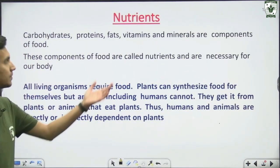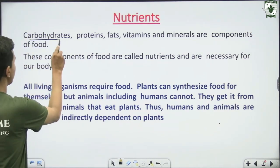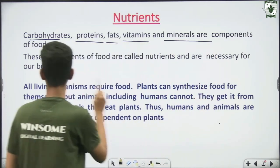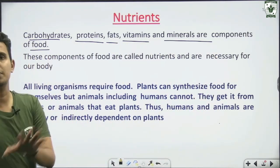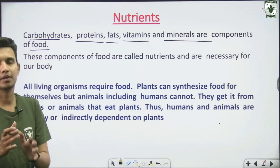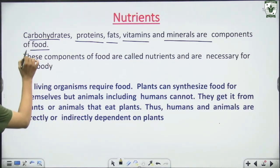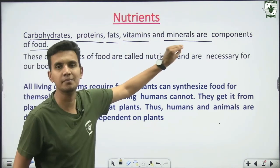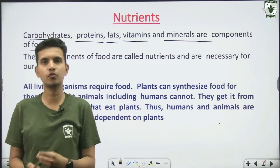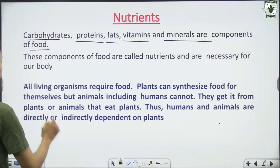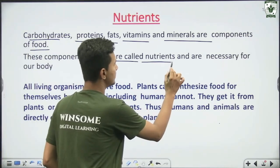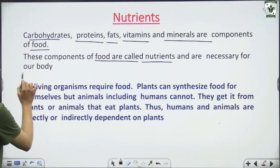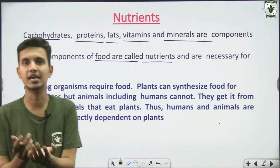Let's talk about nutrients. Carbohydrates, proteins, fats, vitamins, and minerals are the components of food. Carbohydrates, proteins, and fats are the main components, and vitamins and minerals are needed in smaller amounts. These components of food are called nutrients, and they are necessary for our body and very important for its functioning.